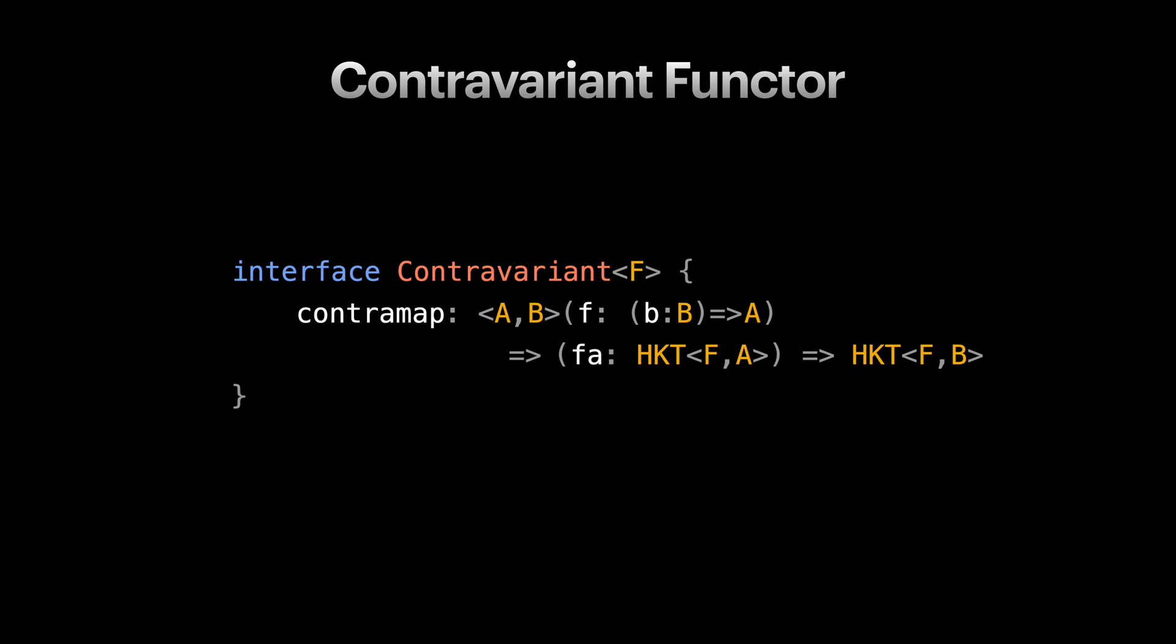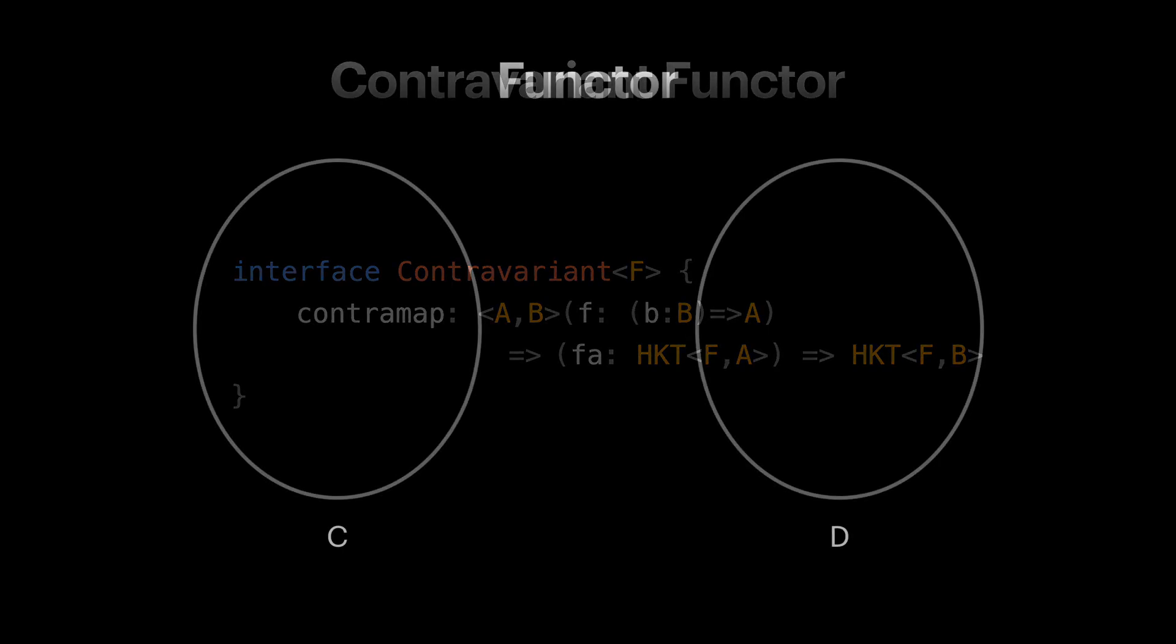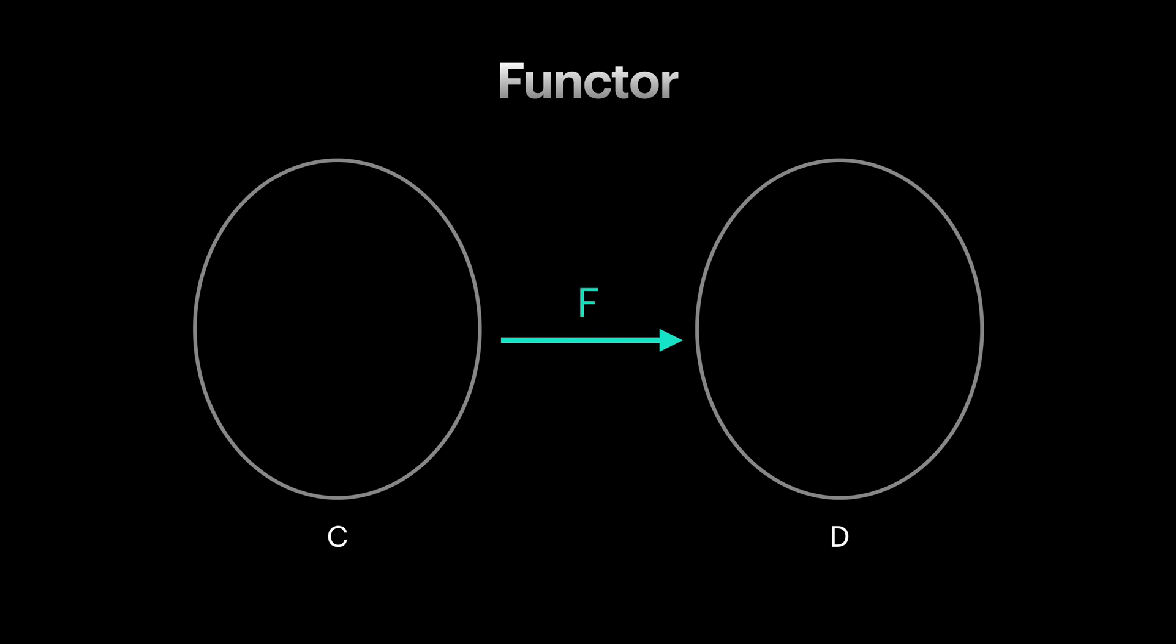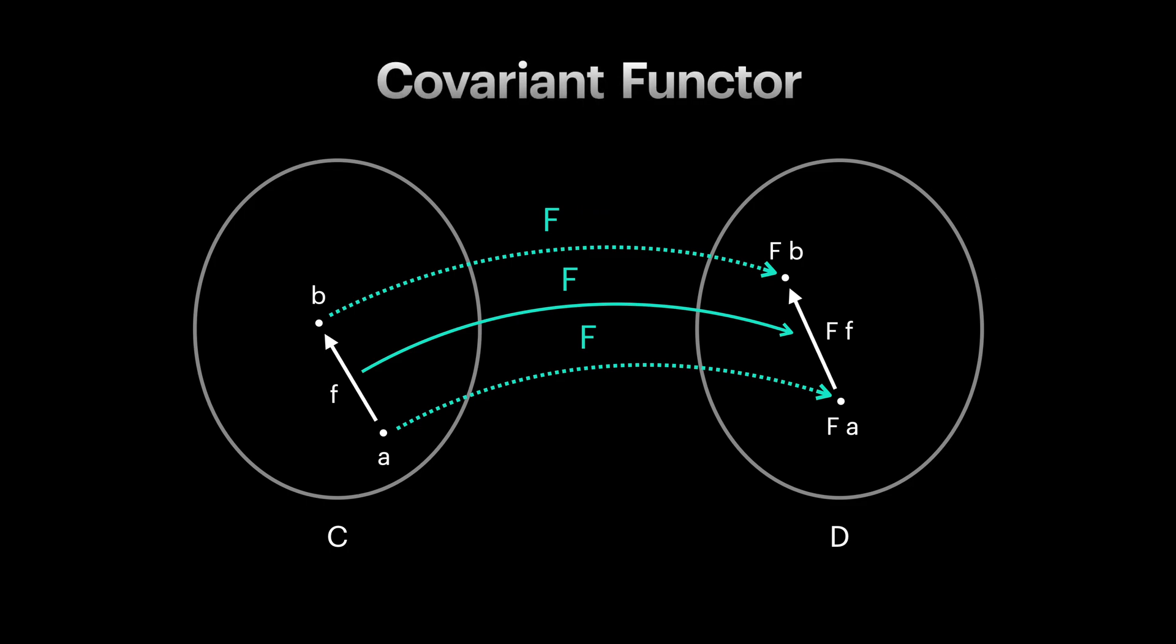Alright, same as covariant functors and bifunctors, contravariant functors should also follow some laws. Fortunately, they are really easy to learn and remember, since they are rewrites of functor laws. We already know in category theory, functor is a mapping between two categories. This mapping consists of mapping of objects and mapping of arrows, in which objects represent types, and arrows represent functions. To be more precise, what we are seeing here is actually a covariant functor.